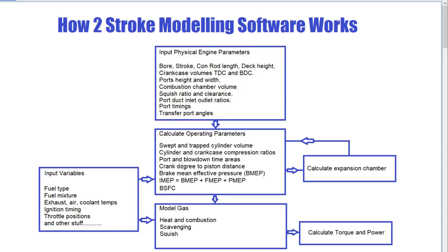Along with the physical dimensions, we have a couple of input variables for the model: the type of fuel we're using, the fuel mixture, the exhaust air and coolant temperatures, ignition timing, even throttle positions, and carby size. All of these other things are variable within the engine, and we have to tell the software basically what our environment is and what we're feeding into it in terms of fuels.